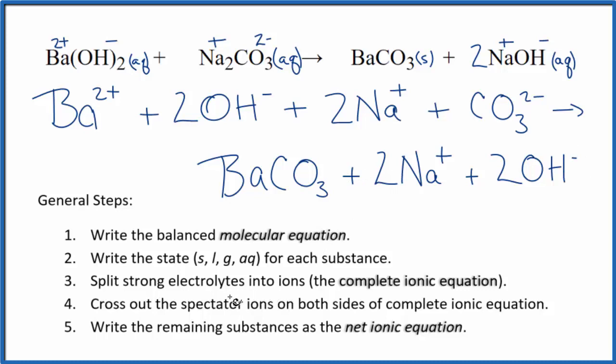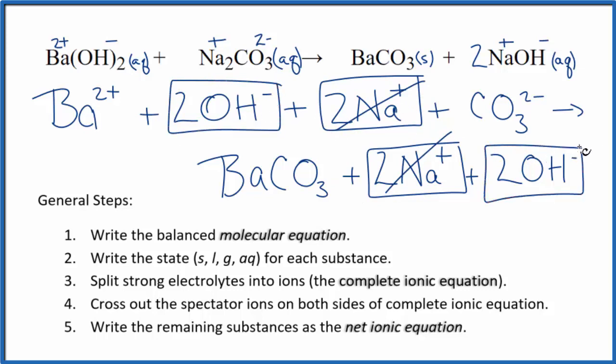Now we can cross out spectator ions. They're on both sides. So I look at this in the reactants here. I have those two sodium ions, and in the products, I see it again. Those are spectator ions. Get rid of those. Two hydroxide ions here in the reactants and in the products. Spectator ions, we cross them out. What's left